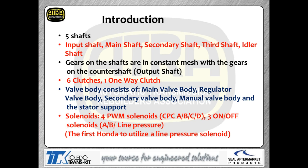This is a five-shaft unit — updated from four-shaft when they went to six speeds. The input shafts, main shafts, and secondary shafts are all there. Just like a manual transmission, the gears on the shafts are in constant mesh with gears on the countershaft. Some gears are locked to the shaft; others use a clutch to lock the gear to the shaft to produce the different gear ratios. The majority of gears you deal with are free-floating, and the clutch locks the gear to the shaft.